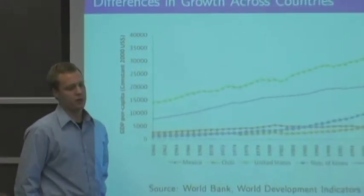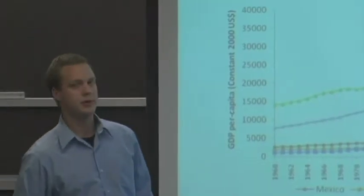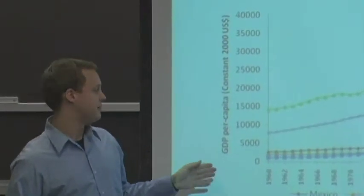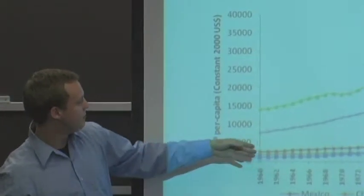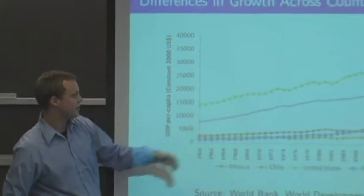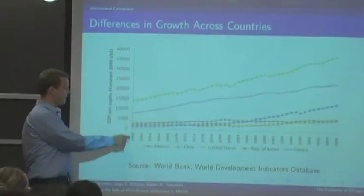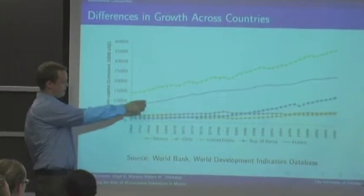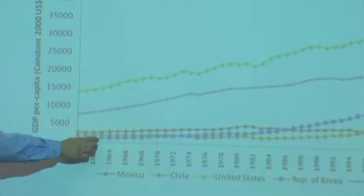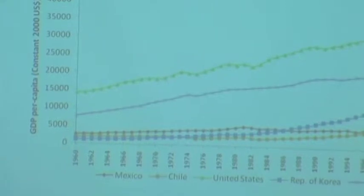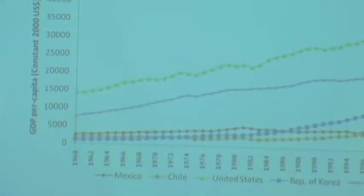These next few slides will be a general introduction to economic growth in Mexico and different aspects of the Mexican economy. Here we have GDP per capita from 1960 almost up to the present year. We have a couple of developed nations, the U.S. and France, and then Mexico, Chile, and Korea. Mexico had pretty reasonable rates of growth through the 1960s and 70s.